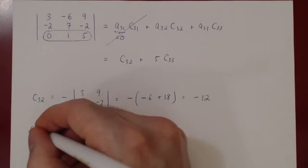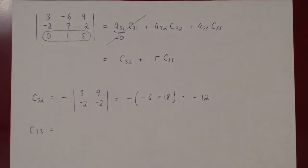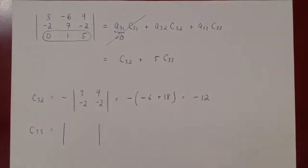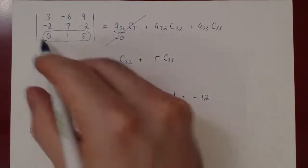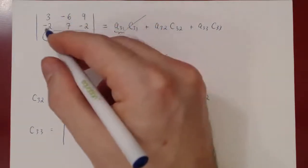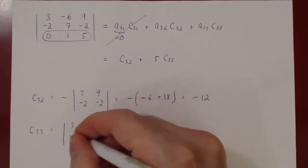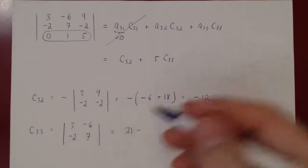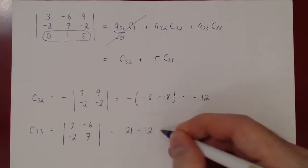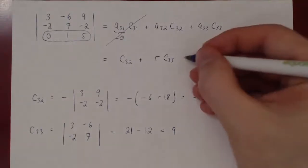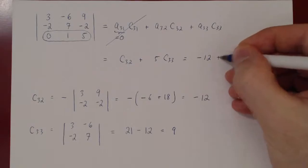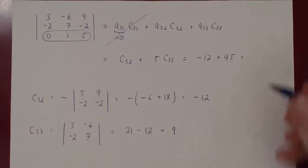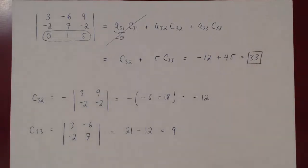For c33: negative 1 to the 3+3 = negative 1 to the 6 = positive 1, so there's no negative sign. The determinant of the matrix obtained from A after deleting the third row and third column gives [3, −6; −2, 7]. That's 3×7 − (−2×(−6)) = 21 − 12 = 9, so c33 = 9. Going back: c32 = −12, plus 5 times c33 = 5×9 = 45, giving −12 + 45 = 33. We have found the determinant of this matrix.